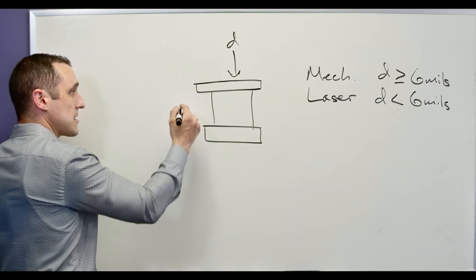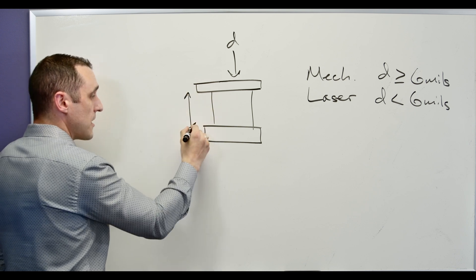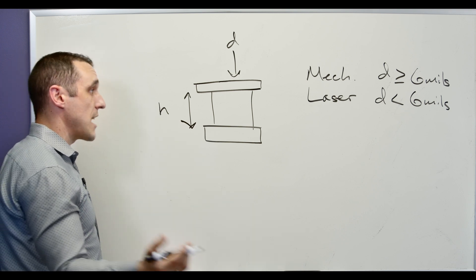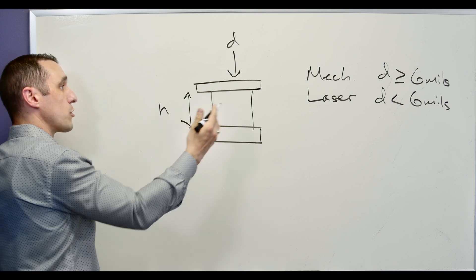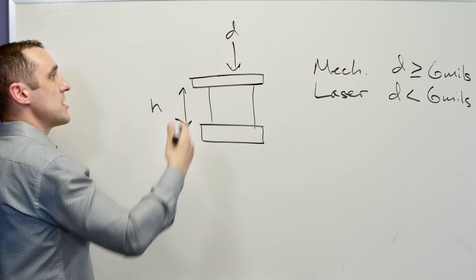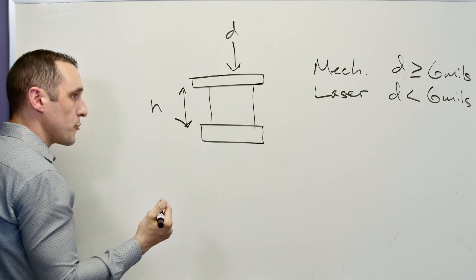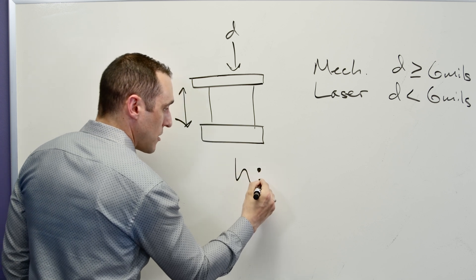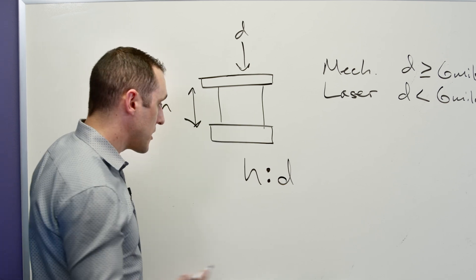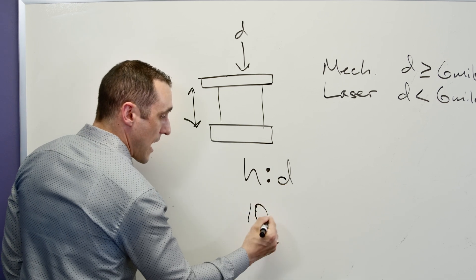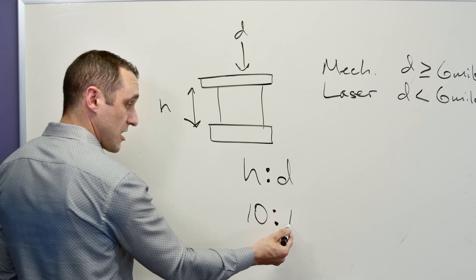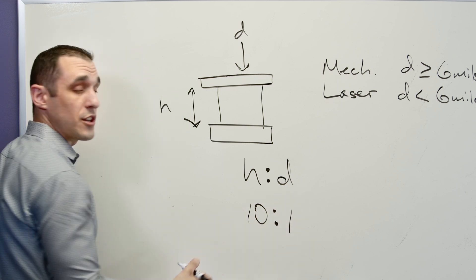What determines this depth H? The dielectric thickness determines H. In order to fabricate a blind or buried via that is highly reliable, we have to stick to a certain aspect ratio — a ratio of H to D. For a through-hole via on a standard thickness board, this could be something like 10 to 1. For example, a 62 mil board with a 6 mil mechanically drilled through-hole gives you a 10 to 1 ratio, and you can even see this go as high as 12 to 1 with a thicker board.